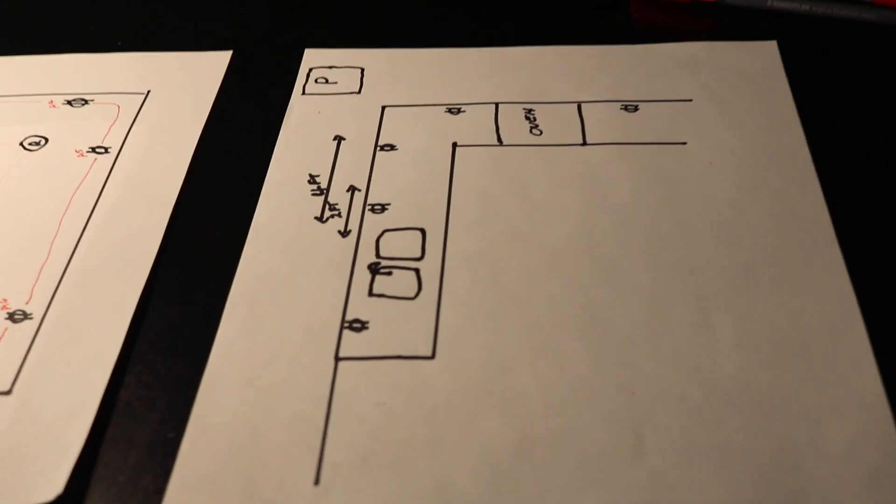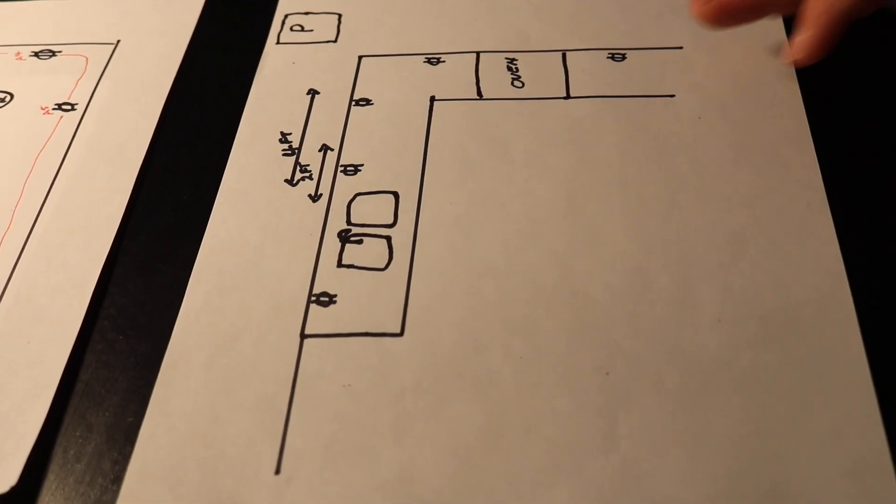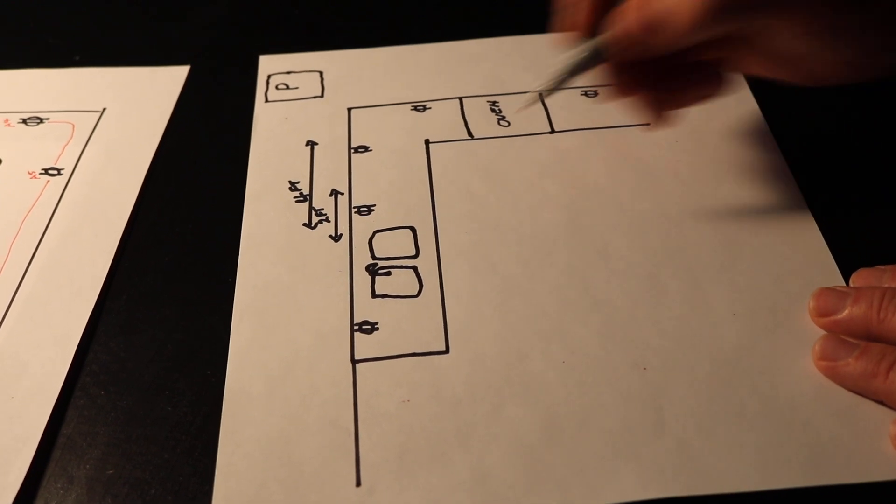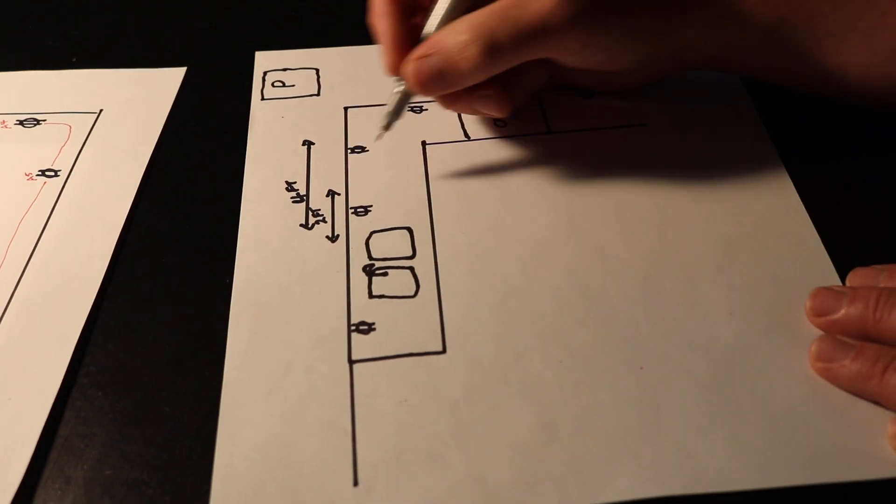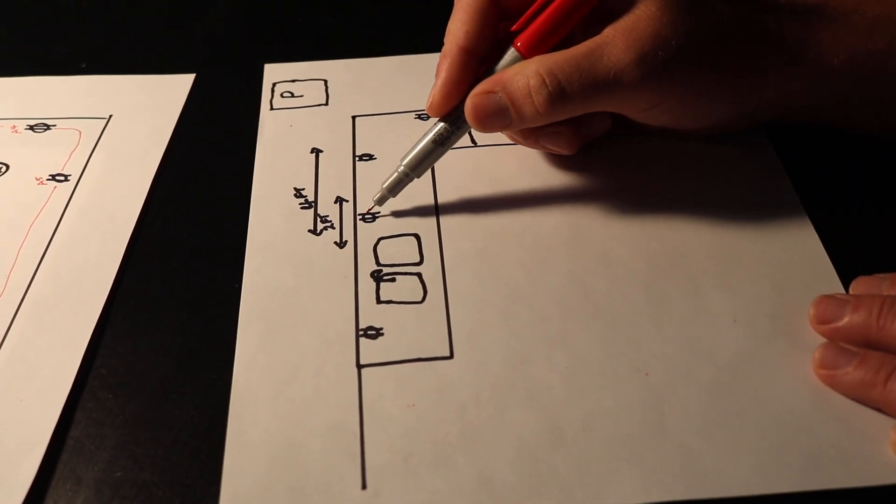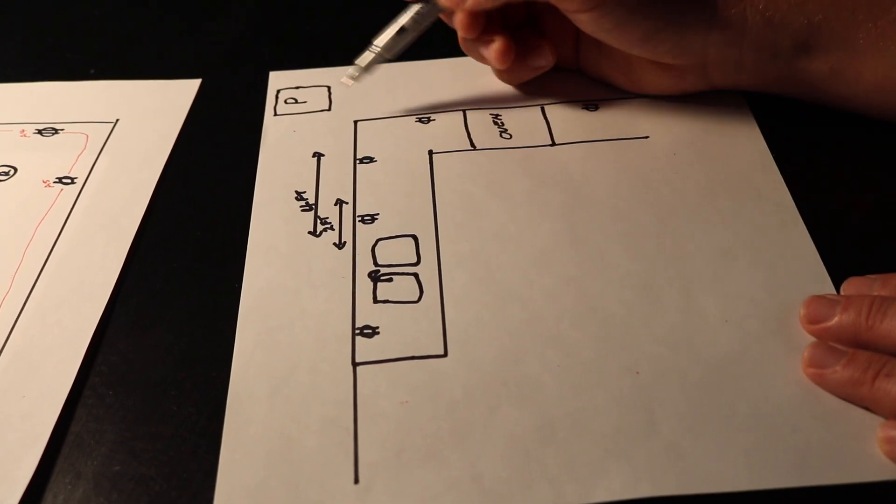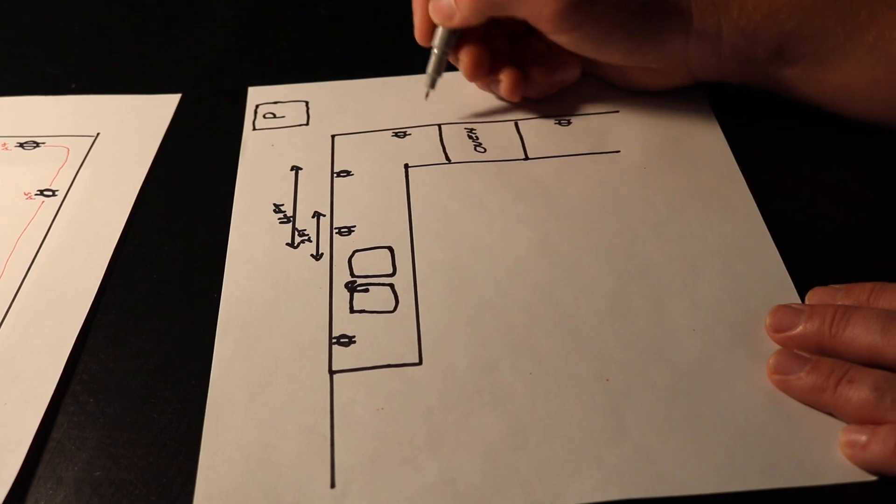And what we have here is a kitchen countertop. This is a sink. And from your sink, you're going to be required to have an outlet within two foot each direction. And then after that two foot, it's every four foot after that. So any edge, two foot and then four foot for your outlets.